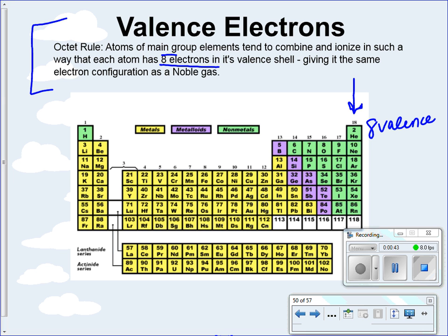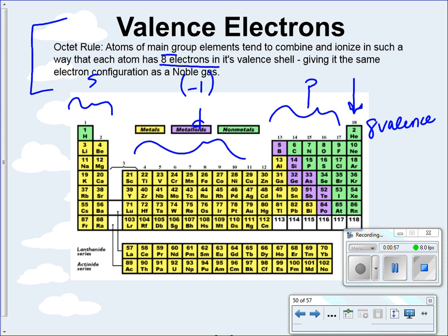Those valence electrons are going to come from our s orbital and our p orbital. The reason they come from s and p is because, if you remember, d is always minus 1 — those are always going to be on the energy level lower — which makes the s and the p orbitals always the outermost energy levels on your electron configuration for your atom.